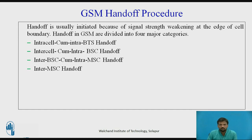Now the last part of this video lecture is the GSM Handoff Procedure. Handoff is usually initiated because of signal strength weakening at the edge of a cell boundary. Generally, the base station monitors the signal strength received by the mobile subscriber, and when the signal strength decreases below the threshold, it initiates a handoff procedure. Handoff in GSM is divided into 4 major categories.